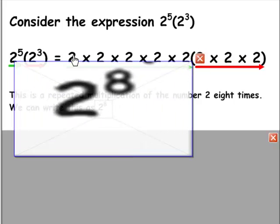Remember, you simply count up the number of 2's: 1, 2, 3, 4, 5, 6, 7, 8, and that becomes the exponent.